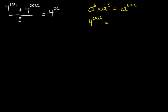We can split this in this form. We can rewrite this as four exponent 2021 times four exponent one. We have the same base over here, so when we multiply them we are just going to add the exponents, which at the end will give us 2022.